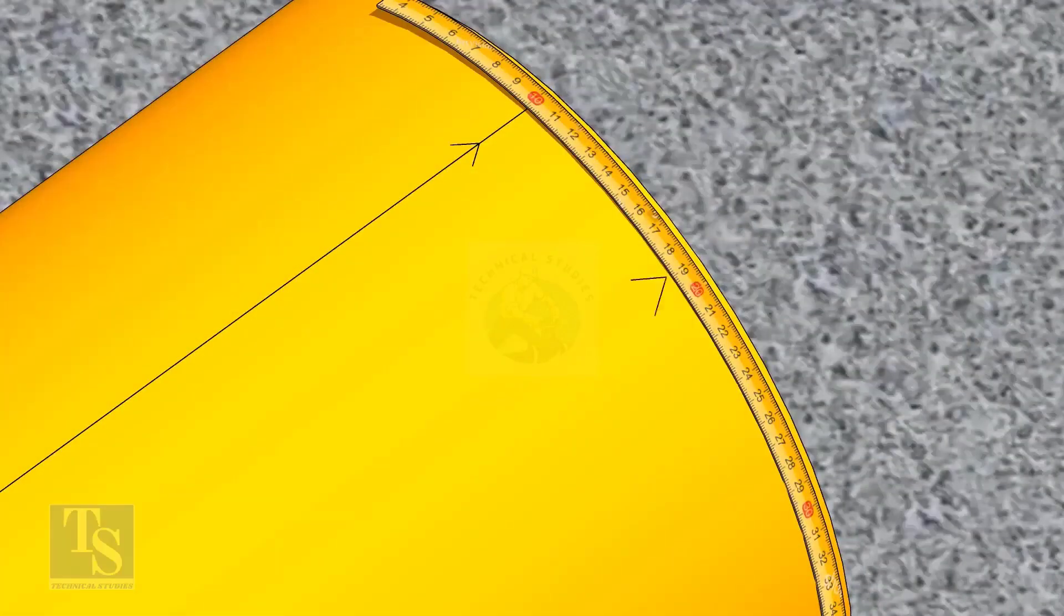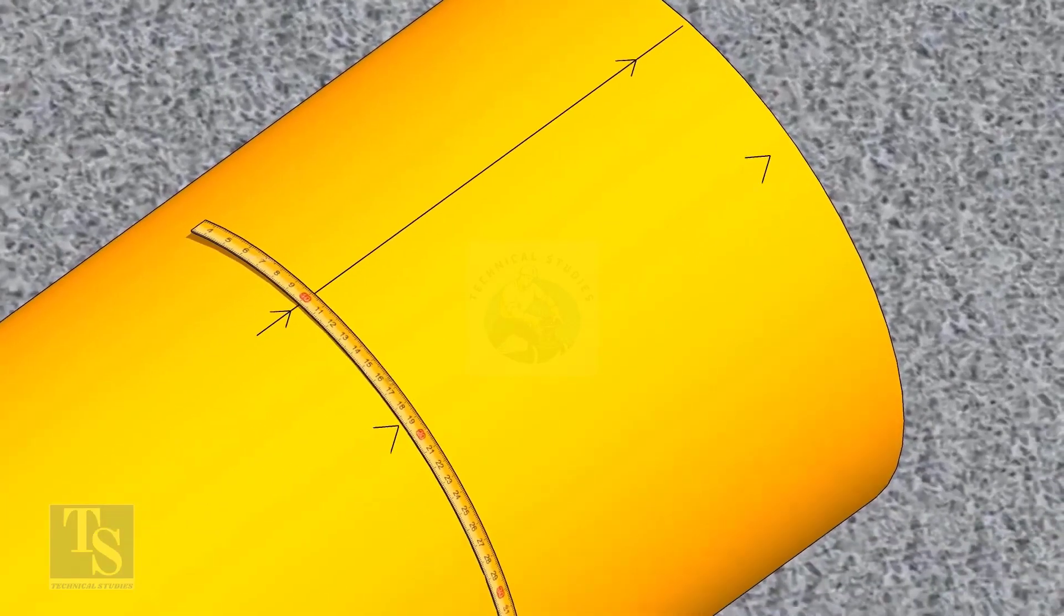Since we are rotating the flange 25 degrees anticlockwise, mark 88.5mm anticlockwise on the pipe as shown.